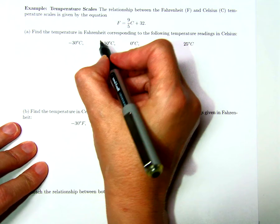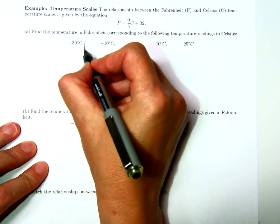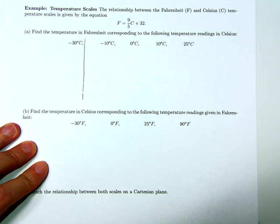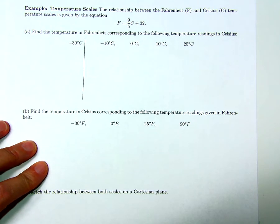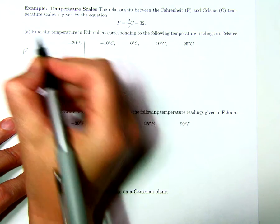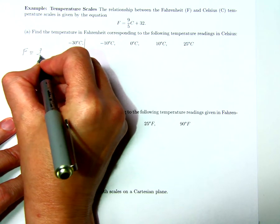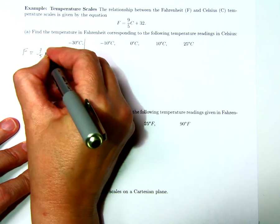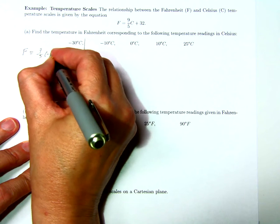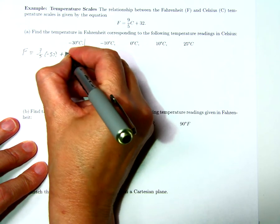Let's try one of these. Suppose we're told that the temperature is negative 30 degrees Celsius. What is the reading in Fahrenheit? It should be 9 over 5 times negative 30 plus 32.